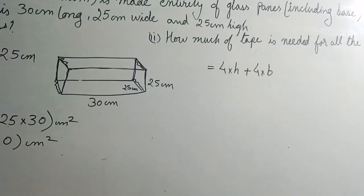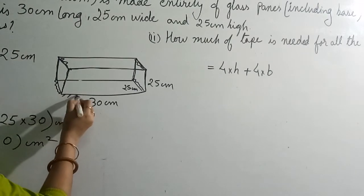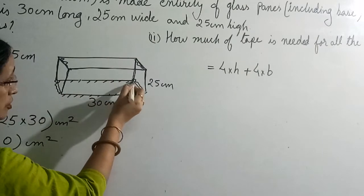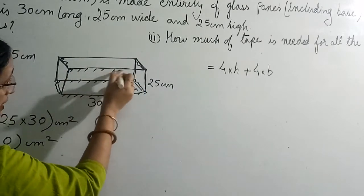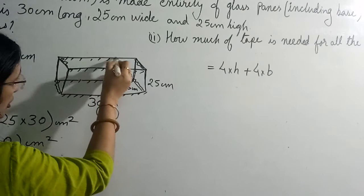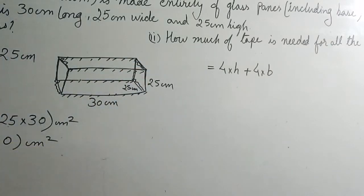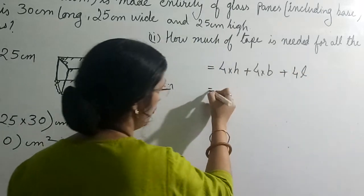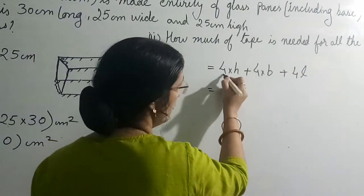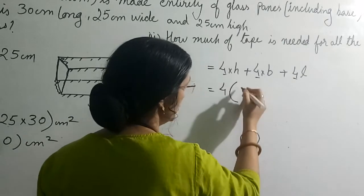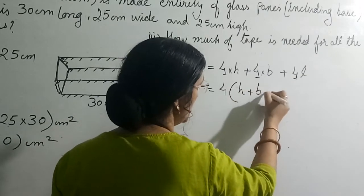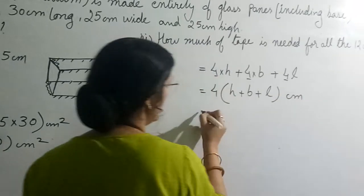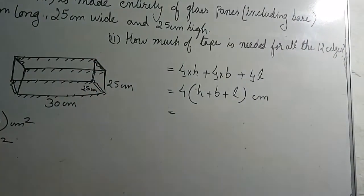And then when we talk about length, so length how many times? See, here the tape will be applied, here using a different symbol so that you can understand the concept nicely. How many lengths are we applying tape? Four. So plus 4 into length. Now we will make our work easy. 4 is on all sides, so we can take 4 common. So it will become 4(H + B + L). Clear? And unit will come in centimeter only because we have to find the length.